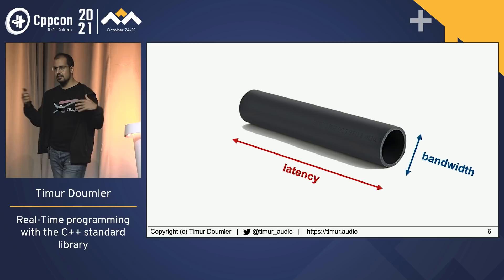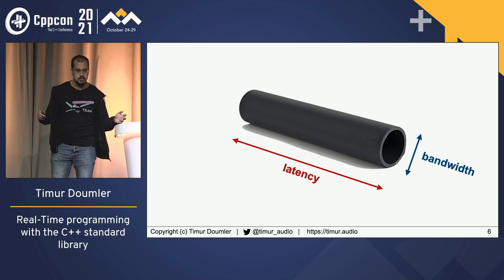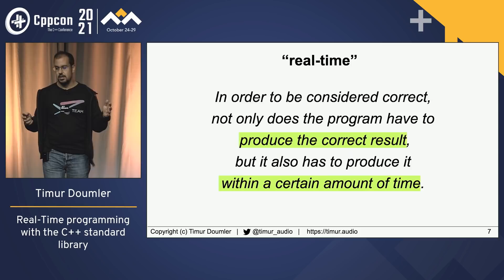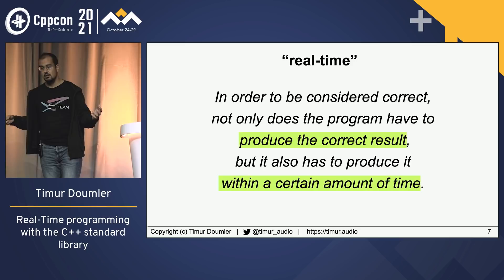In this talk we don't really care about bandwidth or throughput so much, because the amounts of data we're dealing with are not very high. We really care about latency. What 'real-time' means is that we want to put an upper bound on how long the latency can be — in order to be considered correct, your program has to produce the correct result within a certain amount of time.